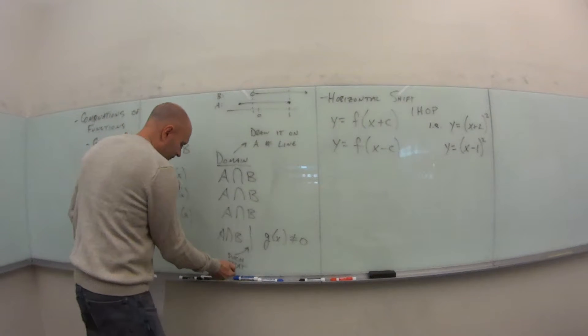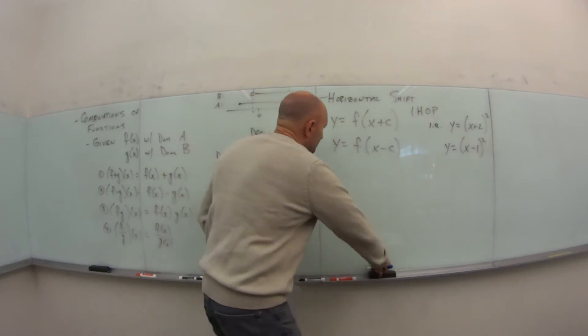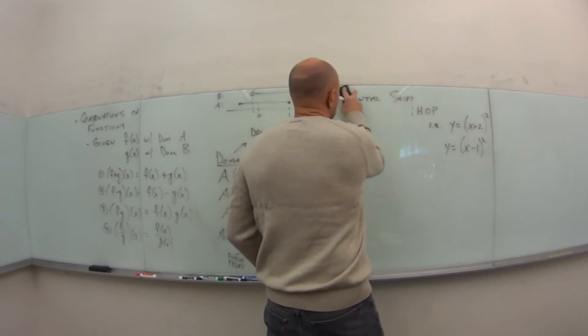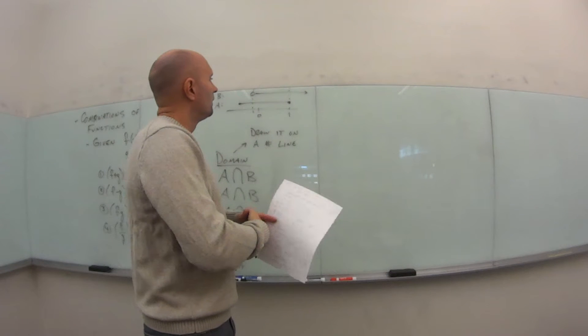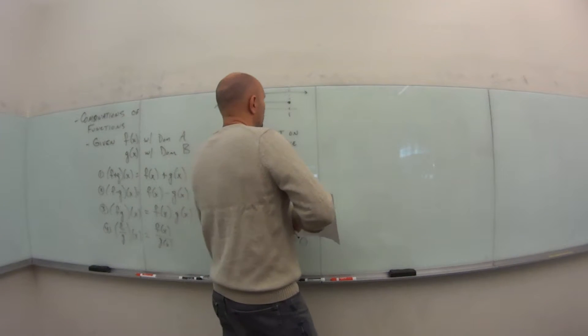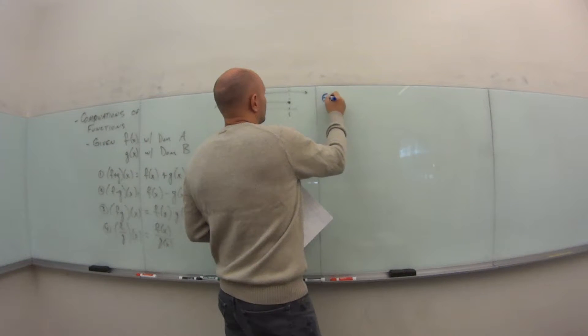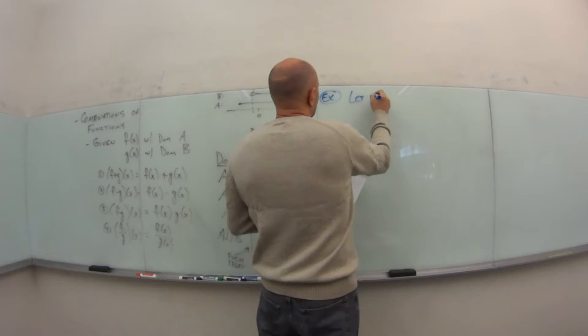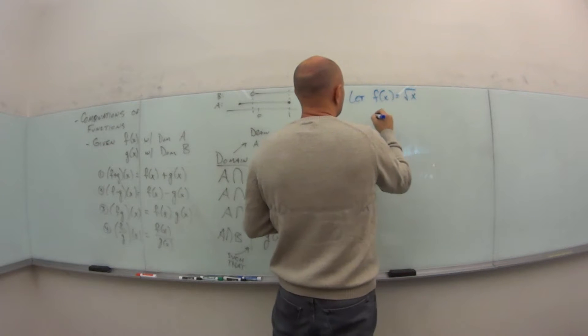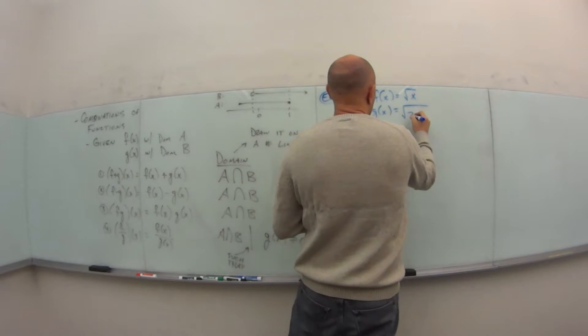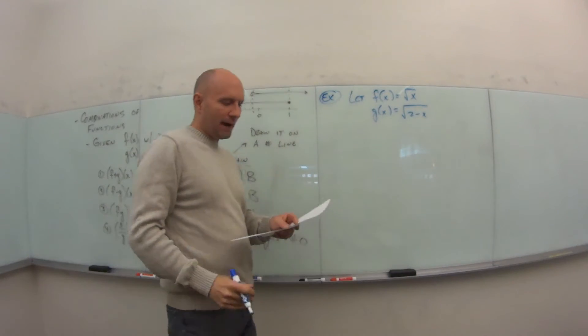So let's look at a problem, actual numbers, see what we're talking about here. Example: let f of x equal square root of x. Let g of x equal the square root of 2 minus x.